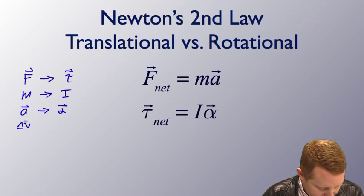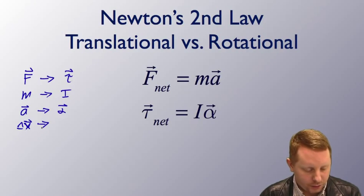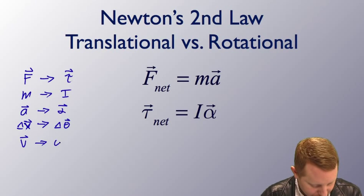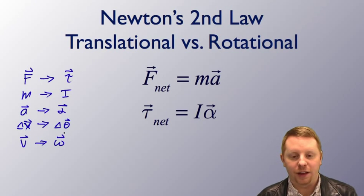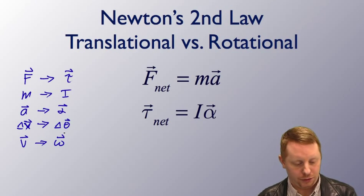Acceleration vector has the rotational analog of angular acceleration. We have displacement, delta x, has the analog equivalent of delta theta. And velocity has the rotational analog of angular velocity. So really we're just looking at the same basic physics but applied to a rotational world.